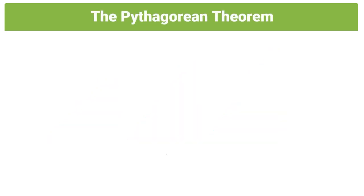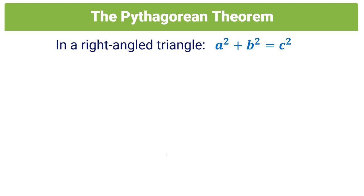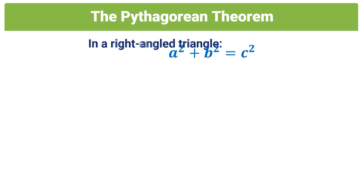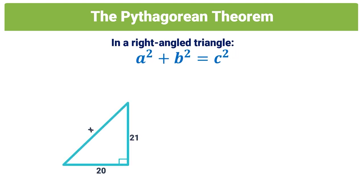Speaking of right-angled triangles, now would be a good time to revise the theorem of Pythagoras. In grade 8, most of us learned that a² + b² = c², where a and b are the two sides of the triangle and c is the hypotenuse. So let's do a couple of examples to consolidate our understanding. In this triangle, we're given two sides but don't know the hypotenuse, which is x.